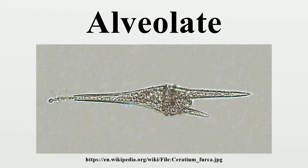Apicomplexa are parasitic protozoa that lack axonemal locomotive structures except in gametes. Ciliates are very common protozoa with many short cilia ranged in rows and two nuclei. Dinoflagellates are mostly marine flagellates, many of which have chloroplasts.